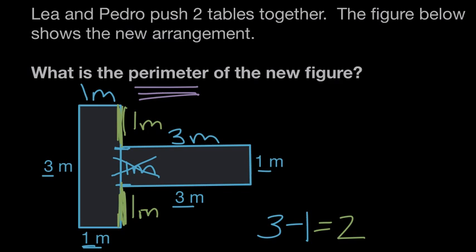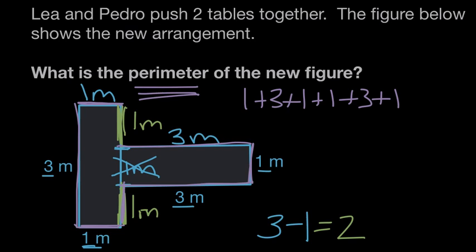The distance around the outside will be all of these lengths put together. So here we have one meter plus moving down the outside three more meters plus one more plus one here on that side we just figured out plus another three, one on the end, another long side of three and finally one more meter going up the side.